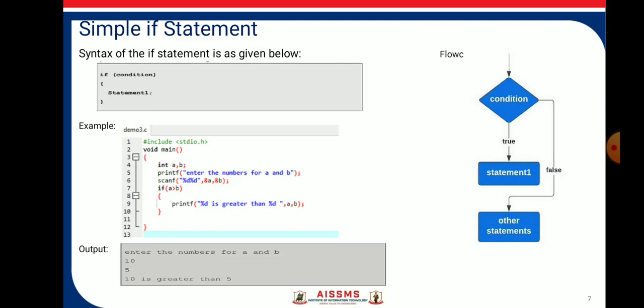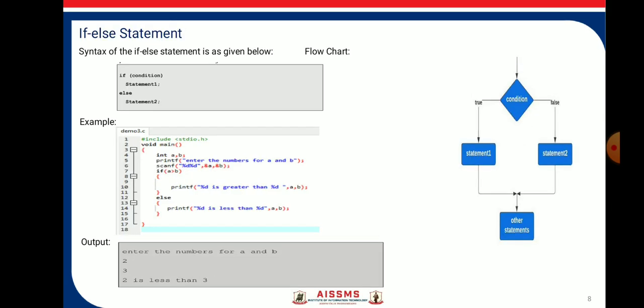Here is an example of the if statement to check the greater number. If a is greater than b, the statement prints 'a is greater'; otherwise 'b is greater.' Next is the if-else statement, which executes statements based on true or false under certain conditions. If the condition is true, the if block is executed; otherwise the else block is executed. An example: if a is greater than b, print 'a is greater'; else 'b is less.'